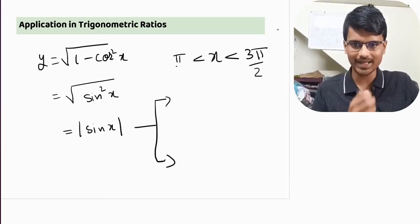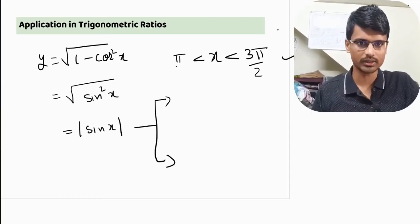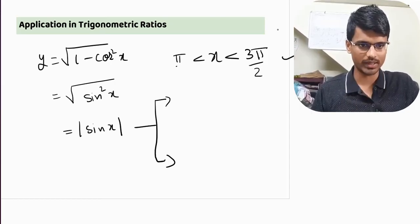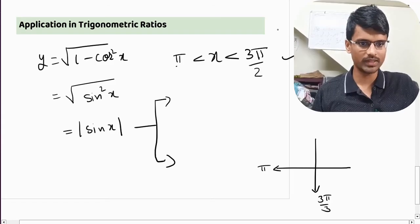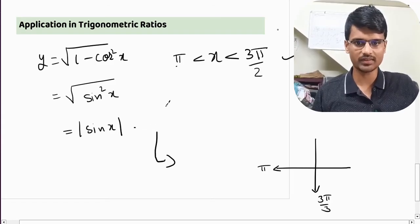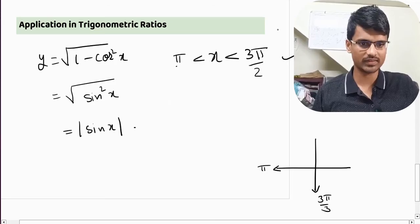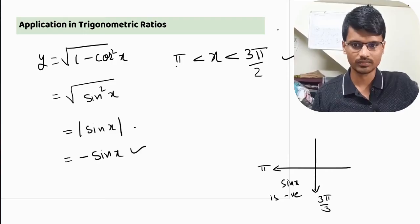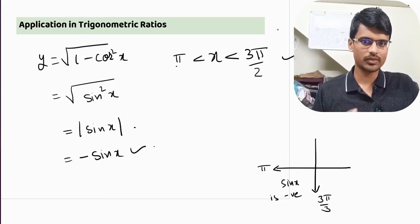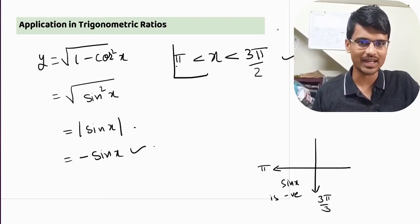Here we know that x is in the third quadrant, pi to 3 pi by 2. In this quadrant, what is sin x? Sin x is negative. Sin x is always negative. That means when I am removing this modulus, the answer is minus sin x. So this is the correct answer. Depending on where the x lies, the answer will come.